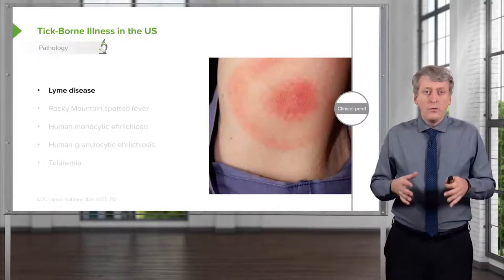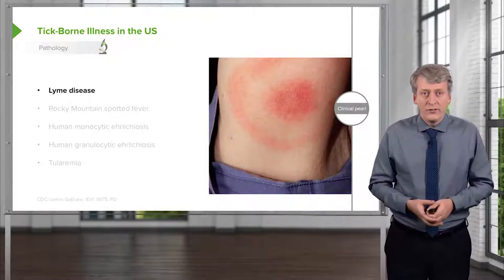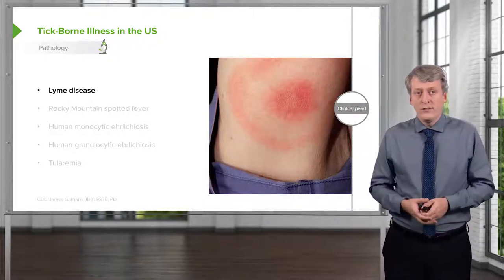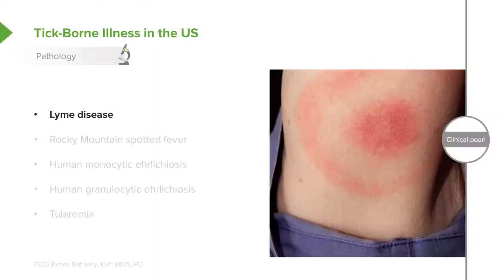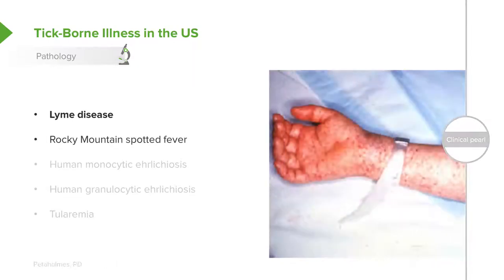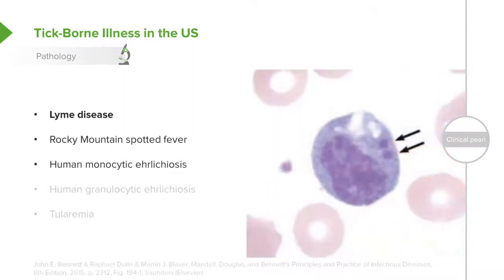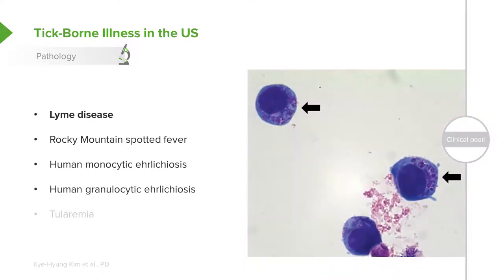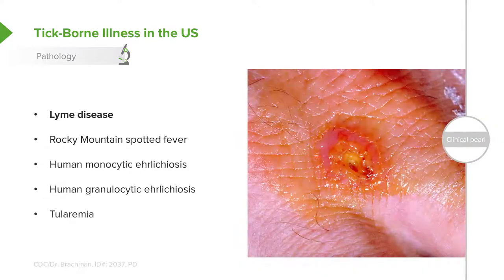Let's briefly review the common tick-borne infections in the United States. We're going to talk today about Lyme disease, Rocky Mountain spotted fever, human monocytic ehrlichiosis, and human granulocytic ehrlichiosis, and then very rarely you might see a case of tularemia.